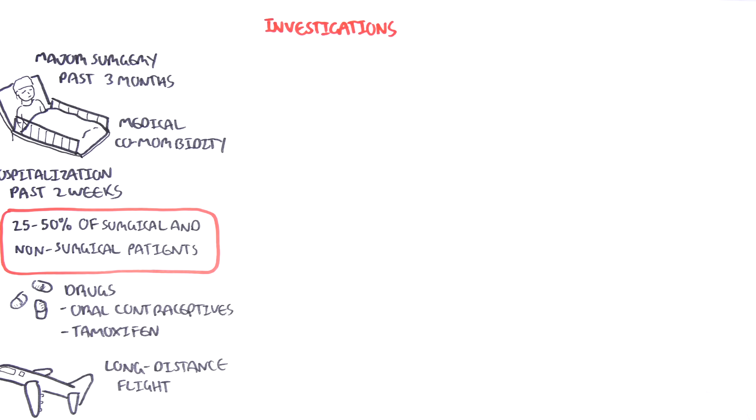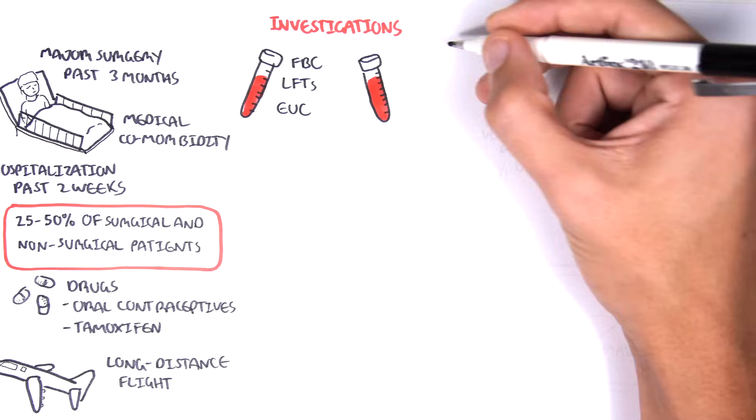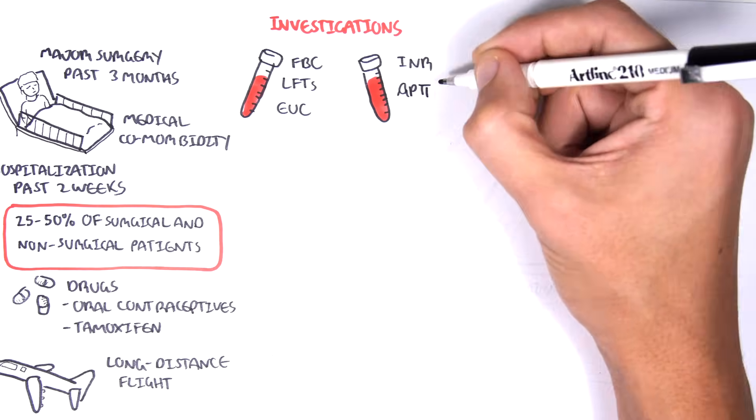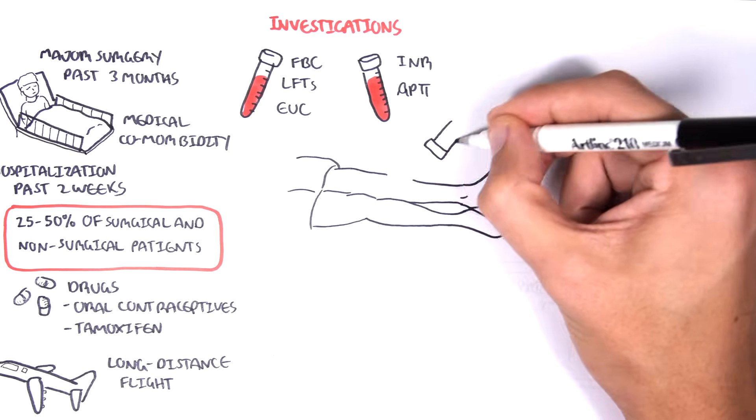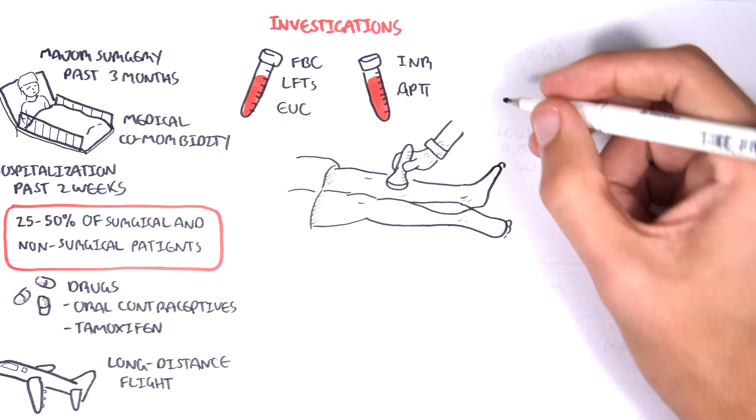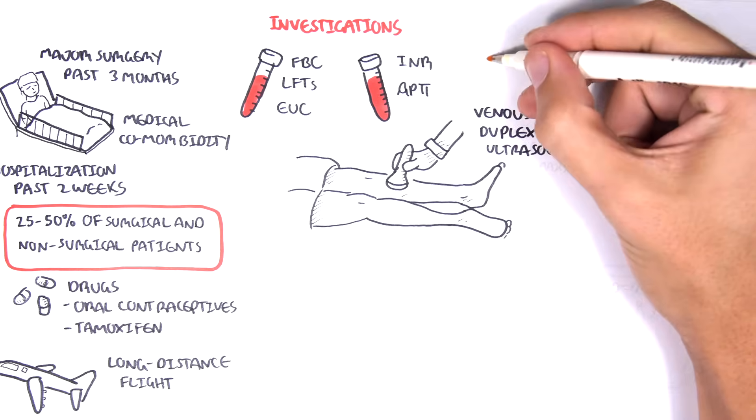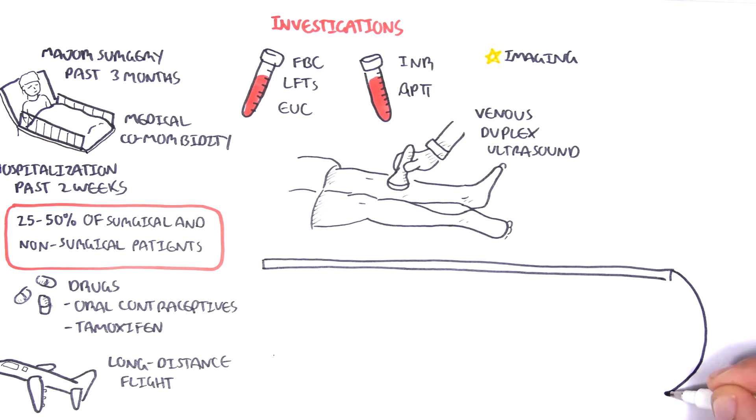Investigations for deep vein thrombosis include a full blood count, liver function test, electrolyte urea creatinine, INR, APTT which are both clotting studies. Imaging including venous duplex ultrasound and imaging can also include imaging for the chest in suspicion of pulmonary embolism.